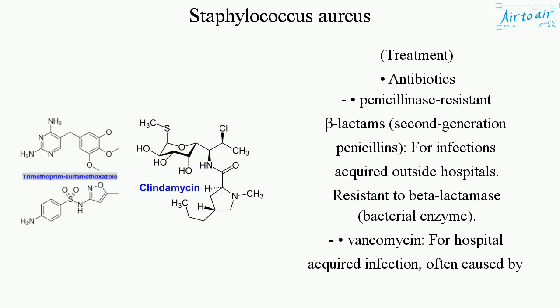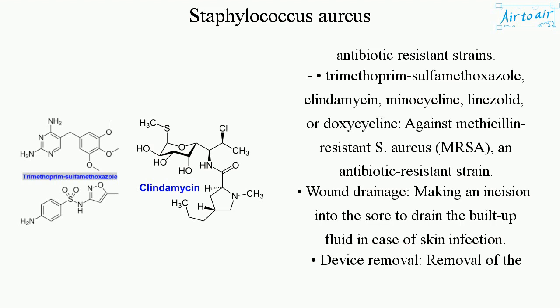Treatment — antibiotics: penicillinase-resistant beta-lactams, second-generation penicillins for infections acquired outside hospitals, resistant to beta-lactamase bacterial enzyme. Vancomycin for hospital-acquired infections, often caused by antibiotic-resistant strains. Trimethoprim-sulfamethoxazole, clindamycin, minocycline, linezolid, or doxycycline.